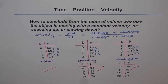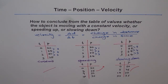So from the data we can analyze and figure out whether the object is speeding up, slowing down, or moving at a constant velocity. If the change in position for the same interval of time is constant, the object moves at constant velocity. If it is increasing, the object is speeding up, and if it is decreasing, the object is slowing down. We'll have a few exercises on this. Thank you and all the best.